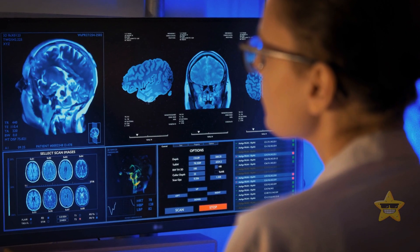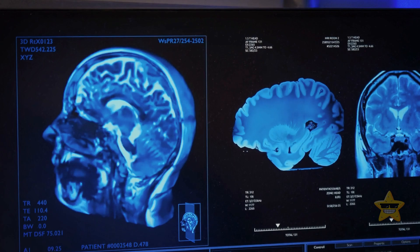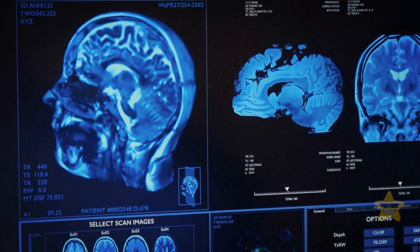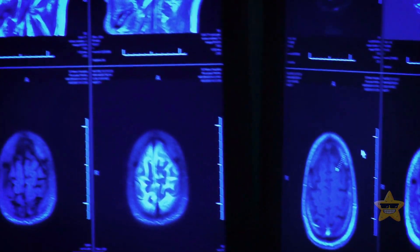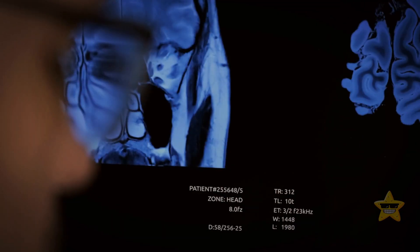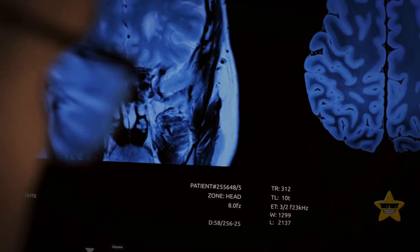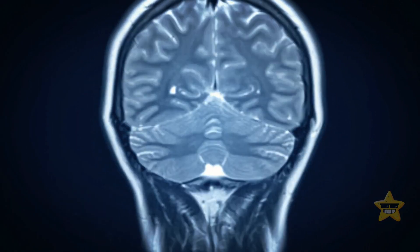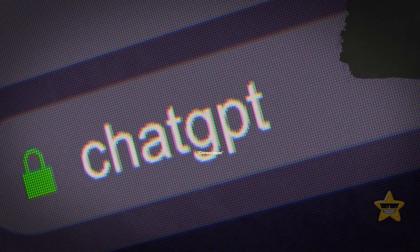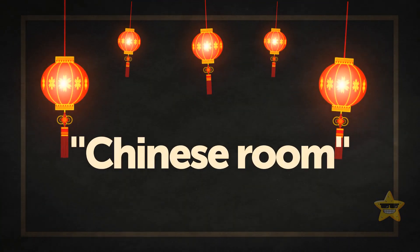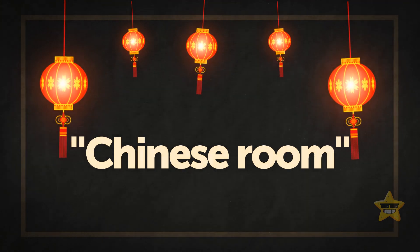However, if we could study the brain 100%, we would be able to recreate this organ. In this case, a fully-fledged artificial intelligence would appear in the world. But considering all modern technologies, it doesn't seem real yet. Artificial intelligence may never be able to reach the level of human consciousness. And the Chinese room experiment can convince you of this.